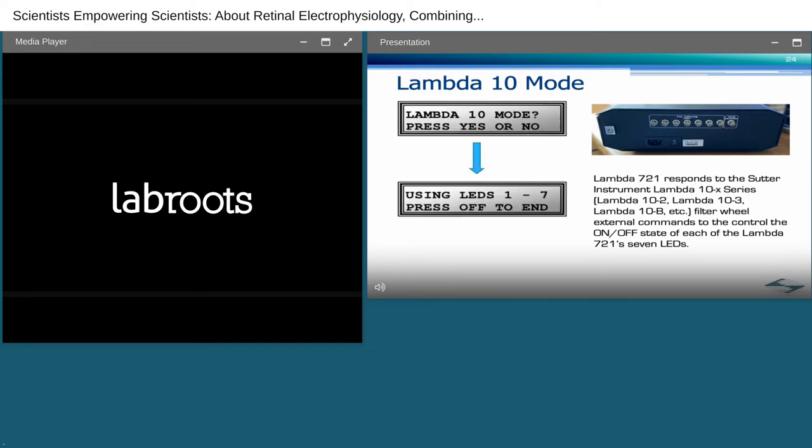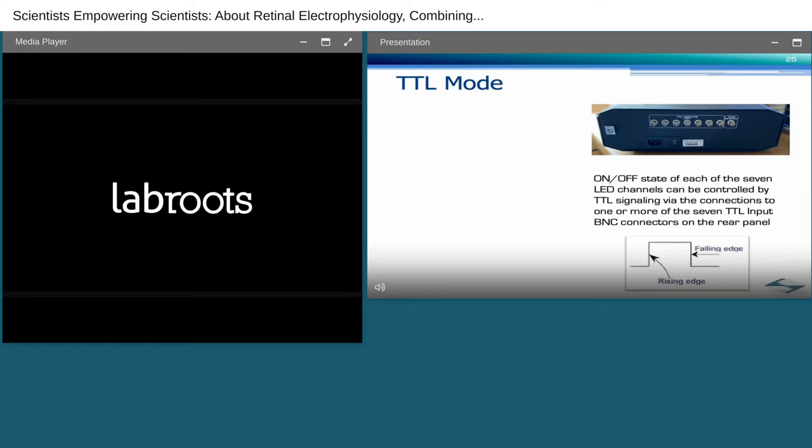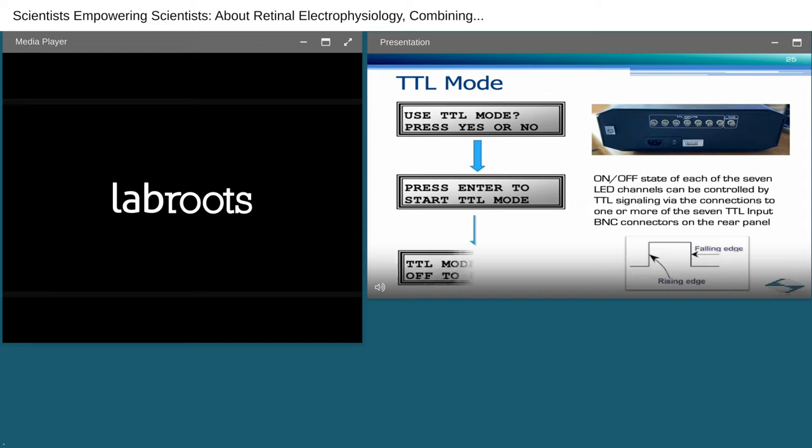This mode allows imaging software, for example, micromanage that already have support for our Lambda 10X controllers to interface with the 721 without the need of any software changes. To activate this mode, first, if another mode is active, press off to return to menu selections. Turn the selection knob until the Lambda 10X prompt appears. Press the Yes button, which will display the mode's execution prompt. In TTL mode, the on-off state of each of the seven LED channels can be controlled by TTL signaling via one or more of the seven TTL input BNC connectors on the rear panel. The state of an LED is on when its corresponding TTL input receives a TTL high signal, which typically is an amplitude above 2.7 volts, and is off with a TTL low, which is typically below 400 millivolts.